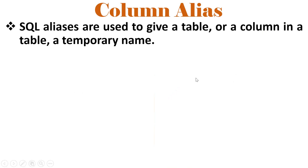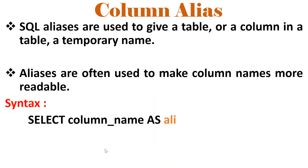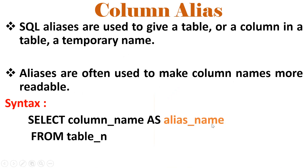Let us discuss some concepts. Column alias: aliases are used to give a table or column a temporary name for more readable purposes. It is an optional name given to a column — a temporary, readable, meaningful name you can give.